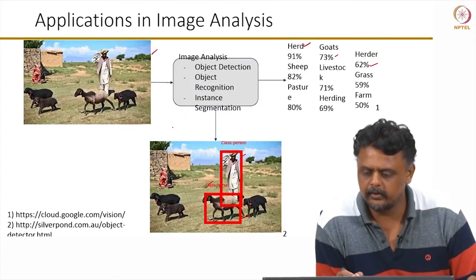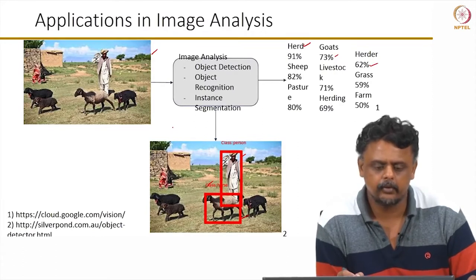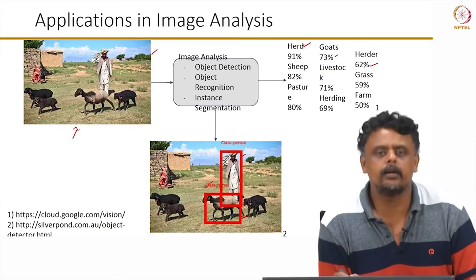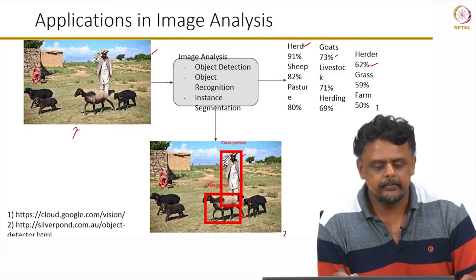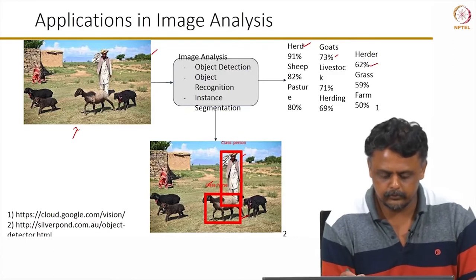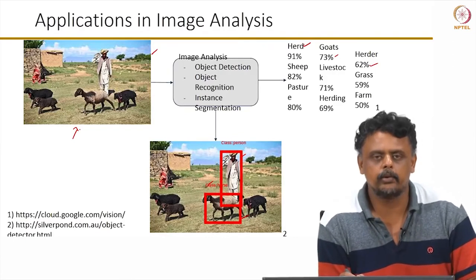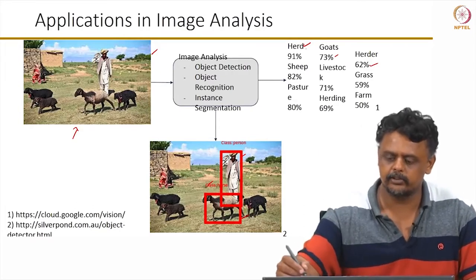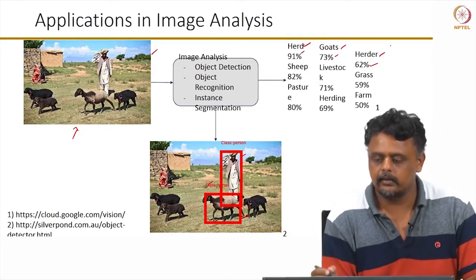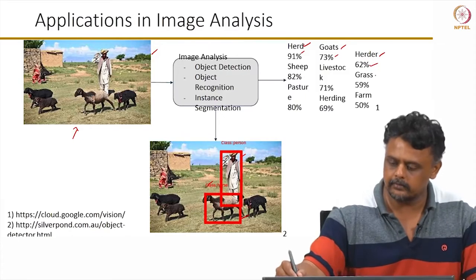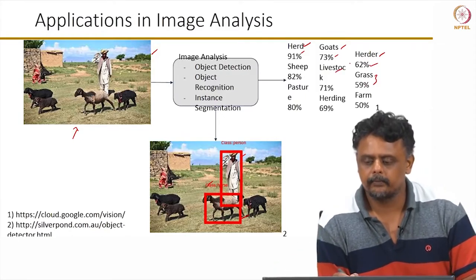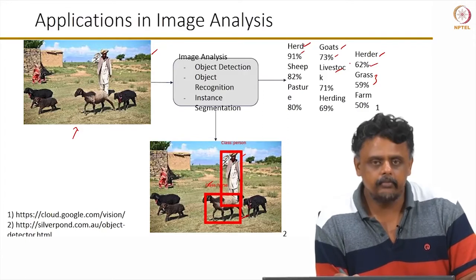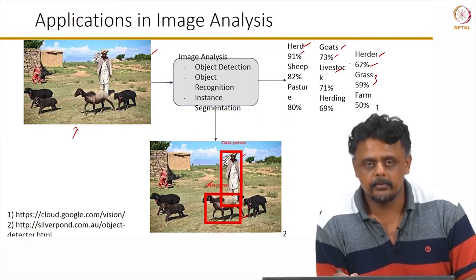For instance, this is an image from the wild showing a rural scene. When given as input to Google Cloud's Vision program — which is freely available — it automatically describes the image, saying it is a herd with a 91% probability of containing goats, and identifies a herder, grass, and livestock. It also identifies that the man in the picture is herding. This level of detail is possible with current CNNs.